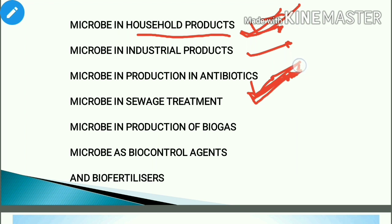From microbes we can also obtain organic acids such as citric acid, lactic acid, butyric acid, and acetic acid. For example, vinegar is obtained through microbial action. Citric acid is produced by the fungus Aspergillus niger. This represents the industrial aspect of microbial applications.